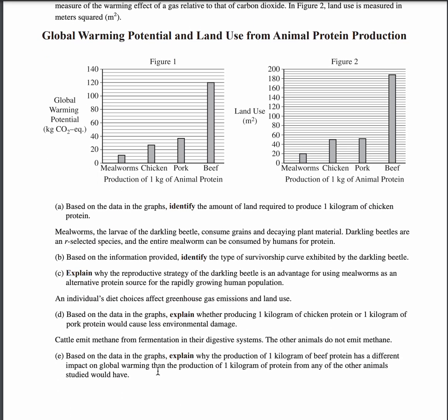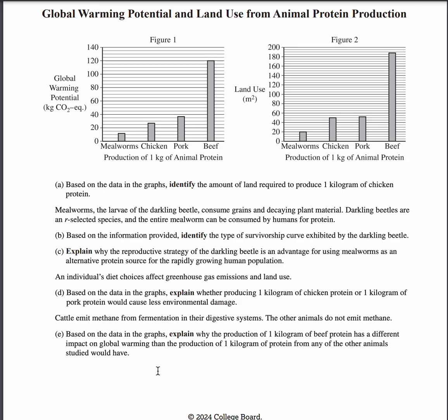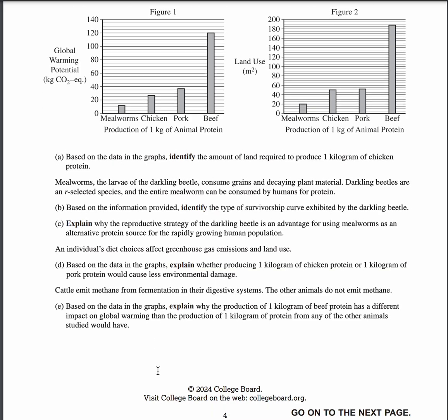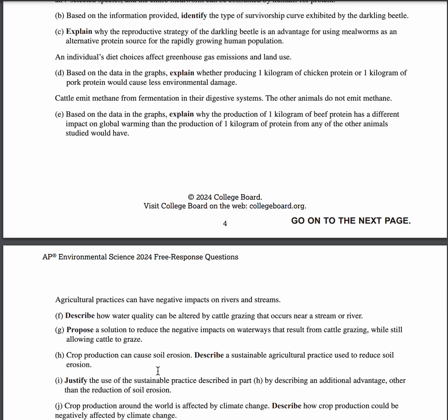For part E, the answer is that cattle produce methane. Producing cattle protein generates methane in addition to CO2. Since methane is a very potent greenhouse gas, producing extra methane on top of CO2 would increase its impact on global warming compared to the other animals tested. For part F, it will lead to a decline in water quality due to overgrazing, leading to an increase in turbidity. For part G, we can use rotational grazing, which is where you move cattle to different areas periodically to allow the soil to replenish itself with nutrients.